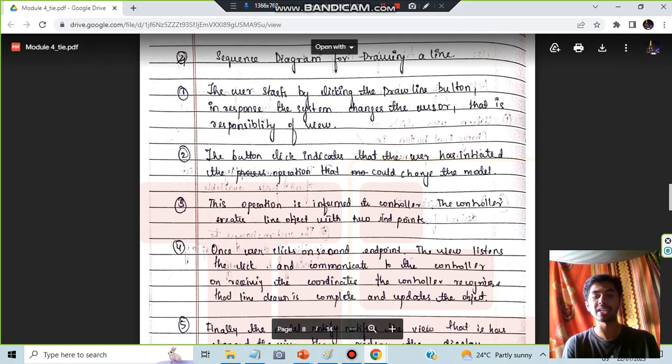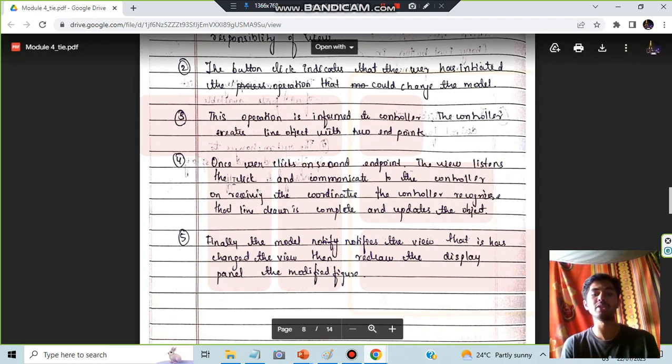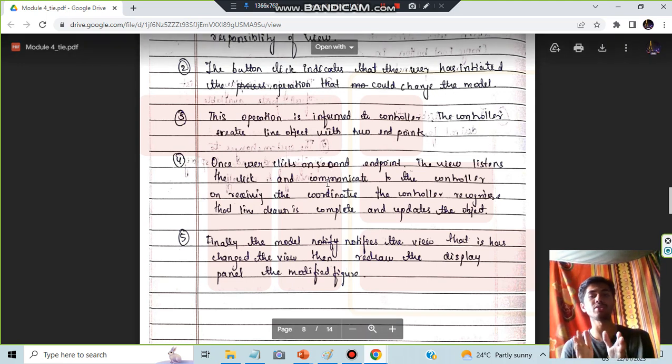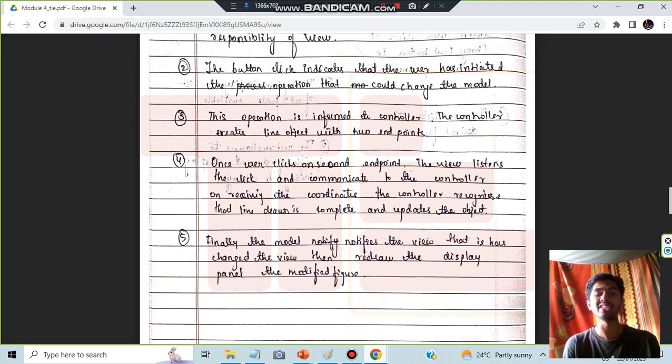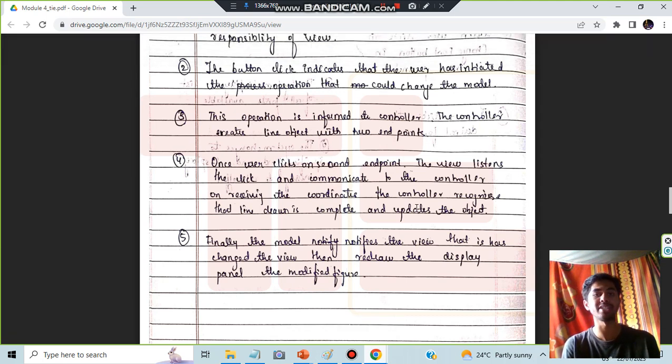Once a user clicks on the second endpoint, the view listens to the click. The user is clicking on the second endpoint, means where has the line to be established and the view will be listening to the click and then communicating to the controller because the controller is the one who will be making the changes. On receiving the coordinate the controller recognizes that the line drawing is complete and updates the object.